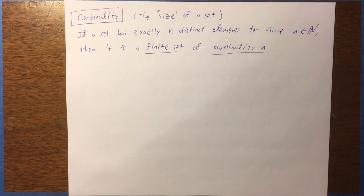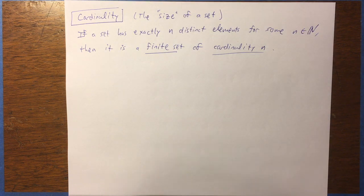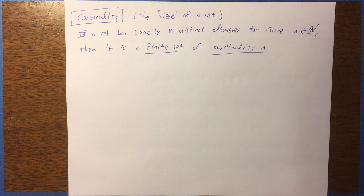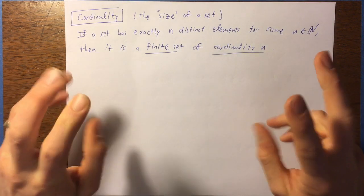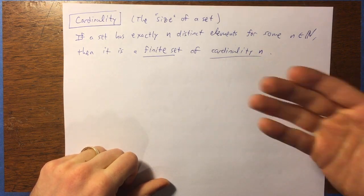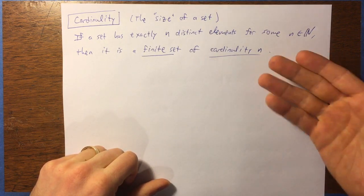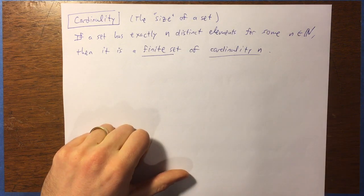The next definition we want to introduce is cardinality. Cardinality essentially refers to the size of a set, like the number of elements in it. You can have finite cardinalities, and you can also have infinite cardinalities with sets that have infinitely many elements. There are different types of infinite cardinality, which is what people mean when they talk about different levels of infinity. Cardinality is one of the ways in which you can discuss different levels of infinity, and we're going to do that in a later section.